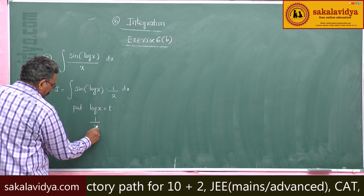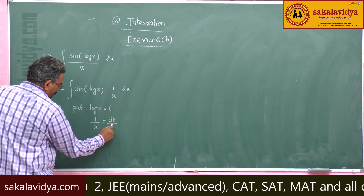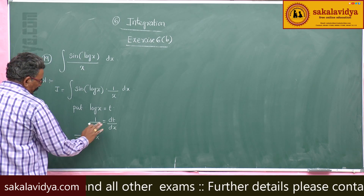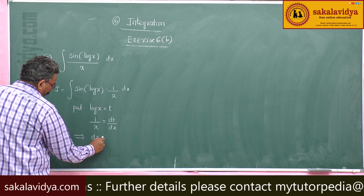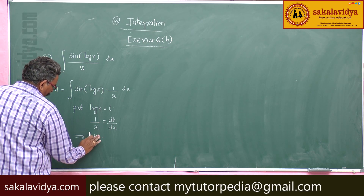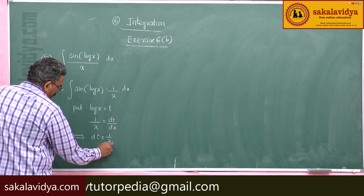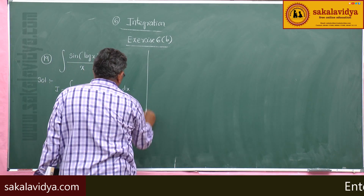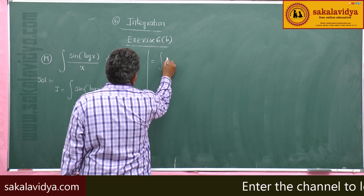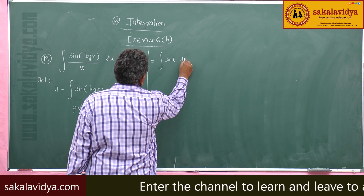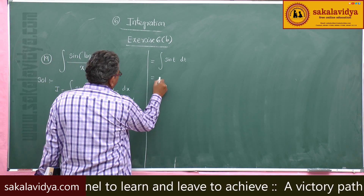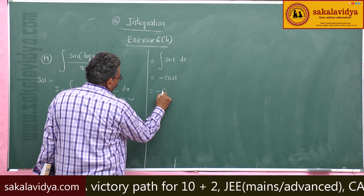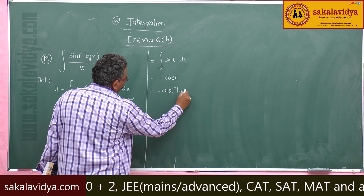Differentiating both sides with respect to x, 1 over x equals dt/dx, so dt equals 1 over x dx. Substituting, 1 over x dx becomes dt and log x becomes t. The integral becomes the integral of sin t dt, which equals minus cos t. Since t equals log x, the answer is minus cos(log x) plus c.